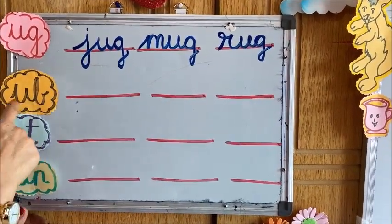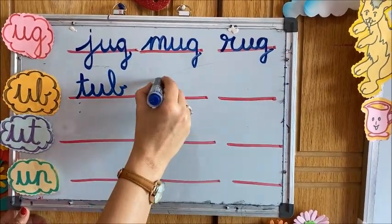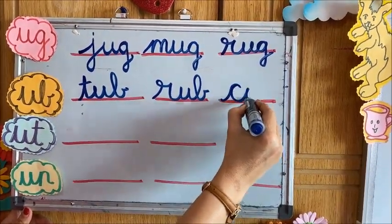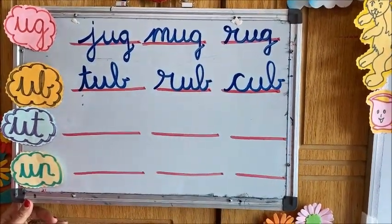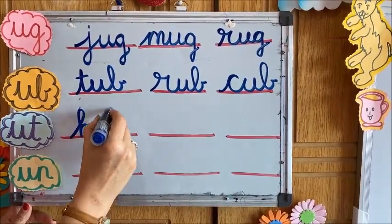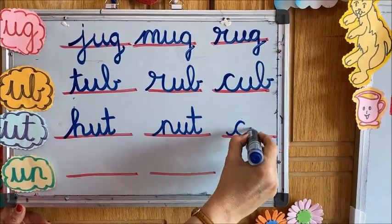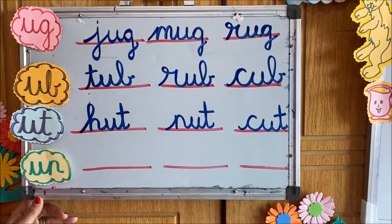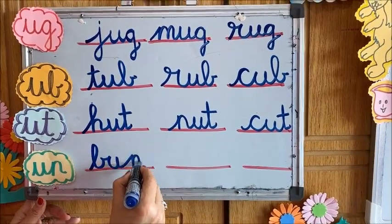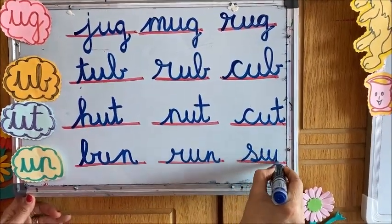The next one is the Ub family: write Tub, then Rub, and the baby animal, that is Cub. This is the Ut family: Hut, Nut, Cut. And this is the Un family, isn't it? So Bun, Run, and Sun.